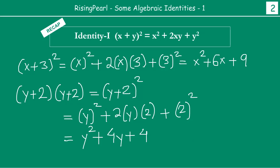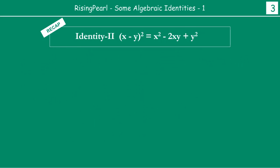Now, friends, let us look at identity 2. The next identity says x minus y whole square is equal to x square minus 2xy plus y square.